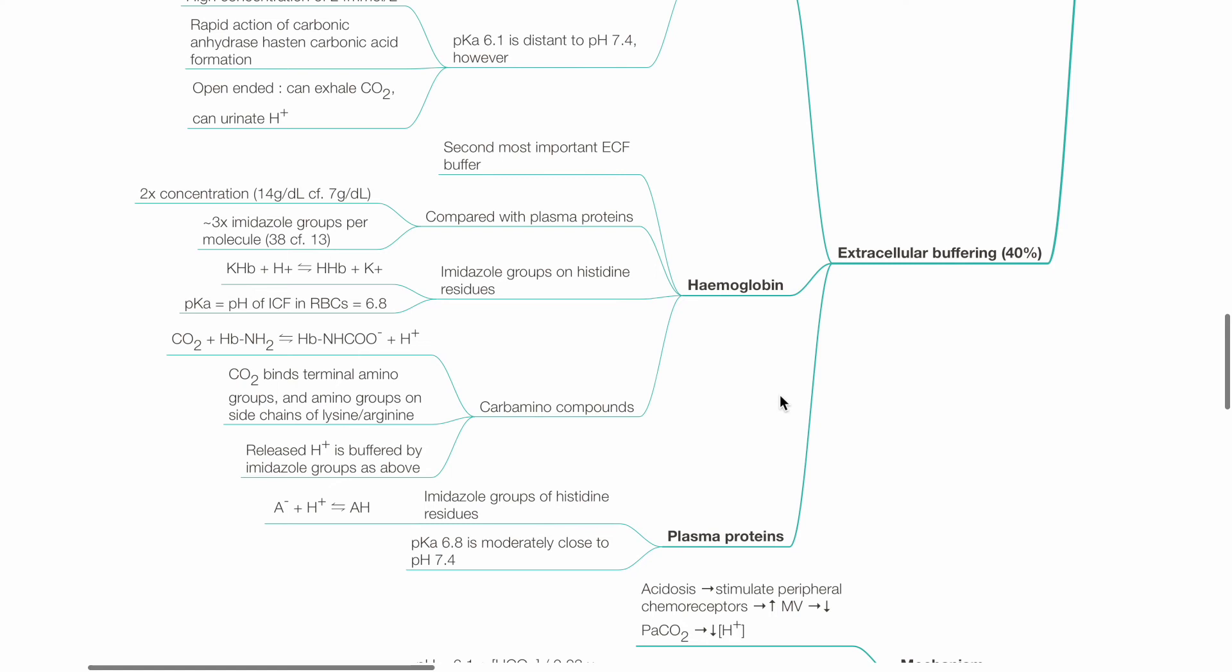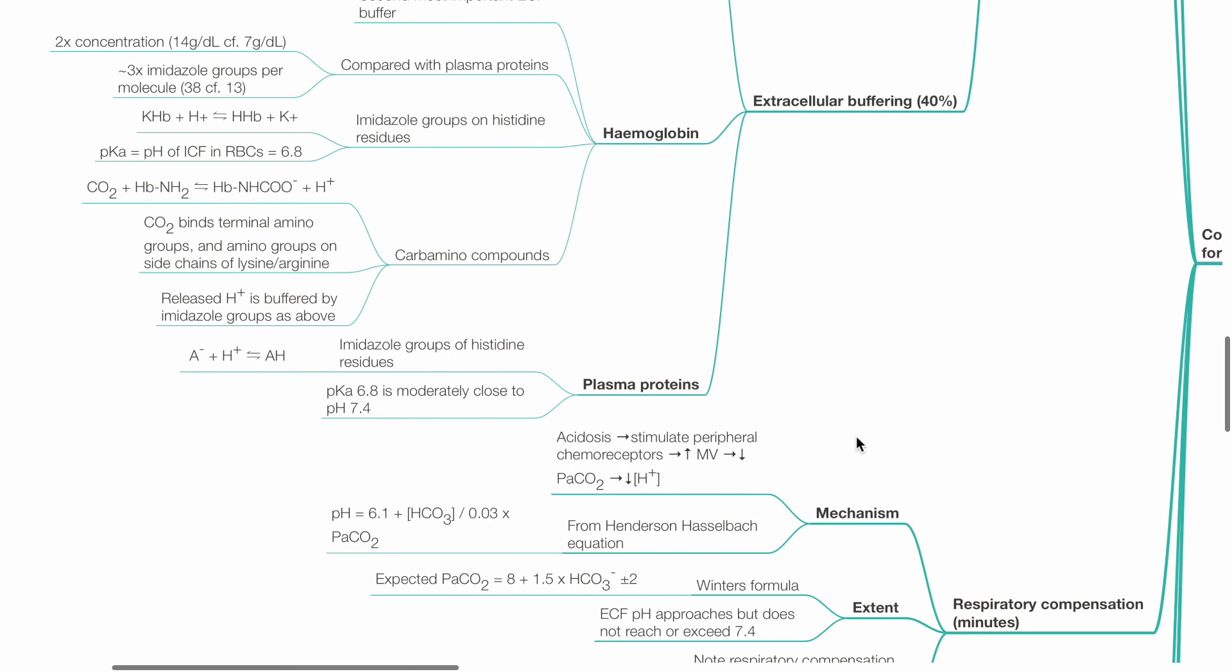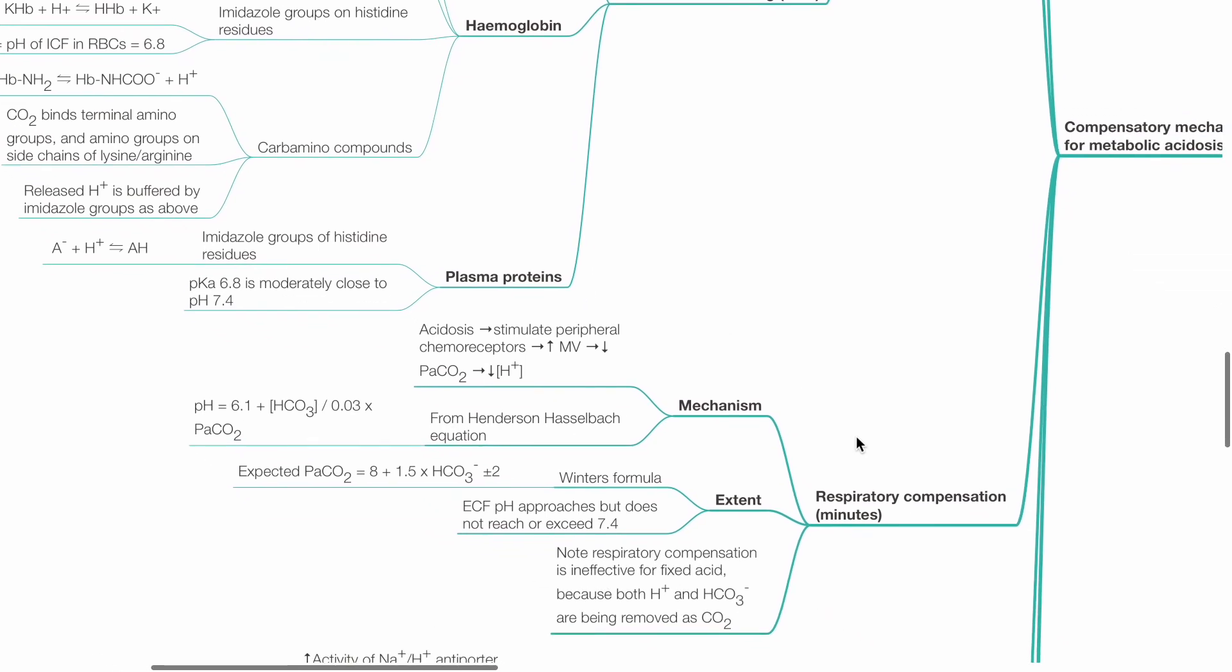Plasma proteins: Imidazole groups of histidine residues are the main site of action of buffering. pKa is 6.8, which is moderately close to plasma pH of 7.4.